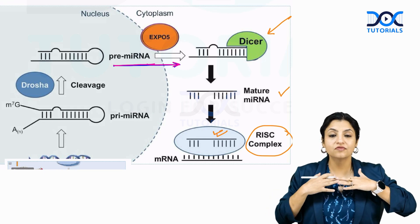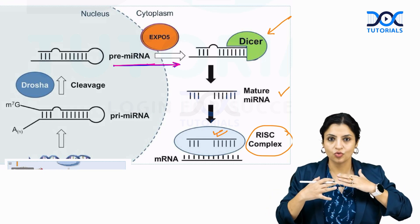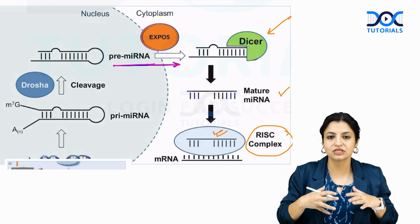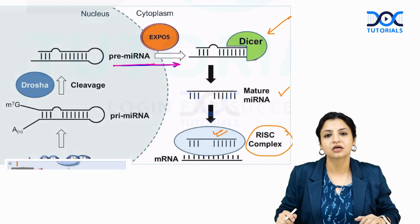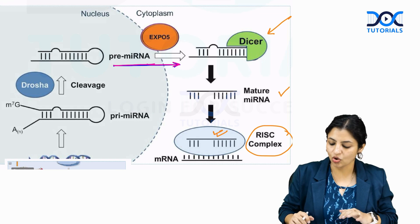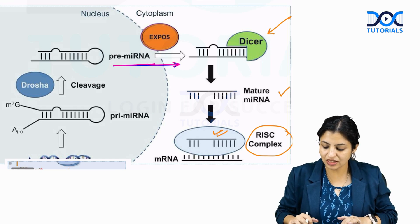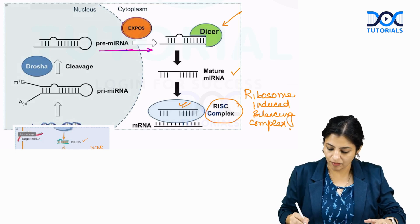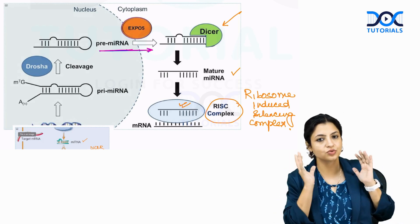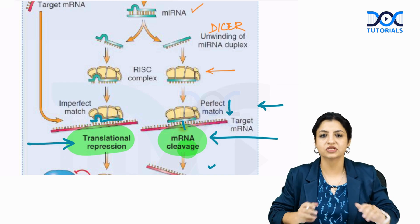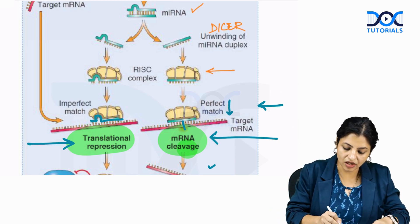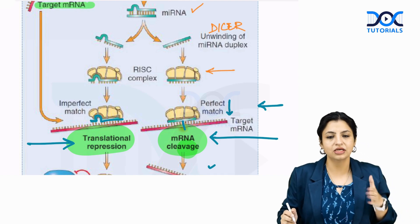This single-stranded microRNA needs a vehicle to know where to go. Its vehicle is the RISC — ribosome-induced silencing complex. It sits in the RISC and travels to the target site — in this case the target mRNA.